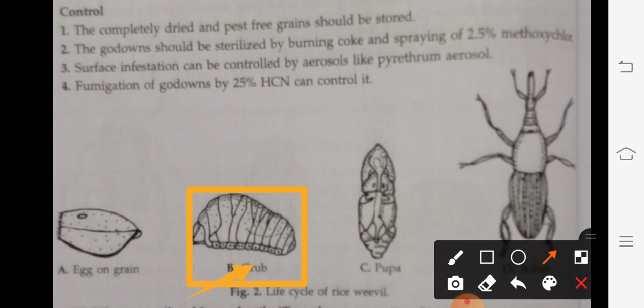In humid conditions, the grub and adult both feed on the grains. The seed left behind with only the covering is incapable of germination.